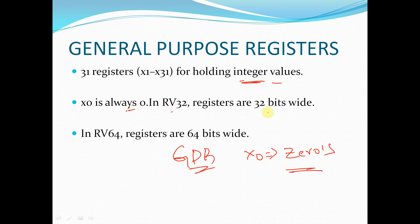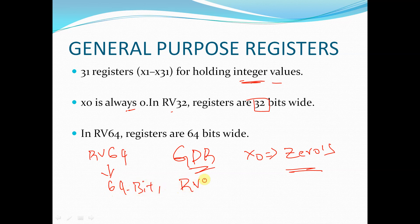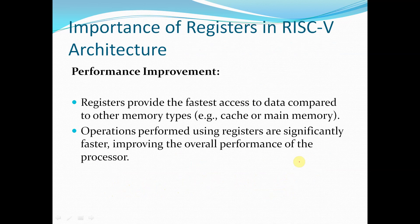In RV32 registers are 32-bit wide. In RV64 the register width is 64 bits. In RV128 the register width is 128 bits. According to the specification, register widths vary accordingly.